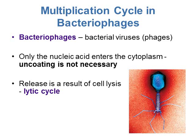The other type of virus we'll look at is bacteriophages — bacterial viruses, often just called phages. In bacteriophages, only the nucleic acid enters the cytoplasm of the bacterial cell, so there is no uncoating step in the multiplication cycle. The release of the virus usually results in cell lysis, which is called the lytic cycle.